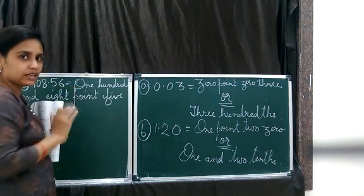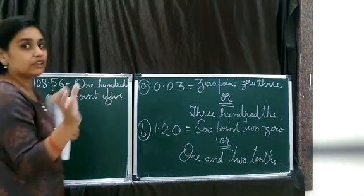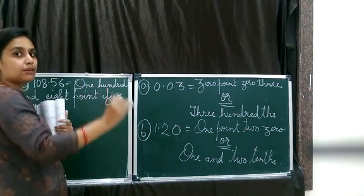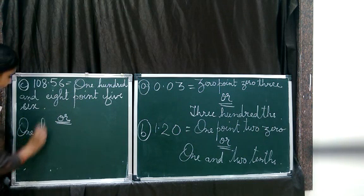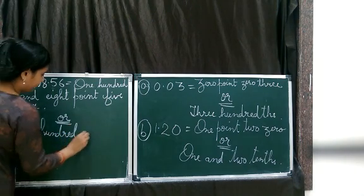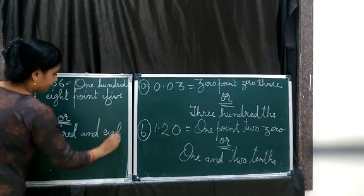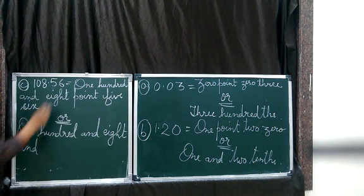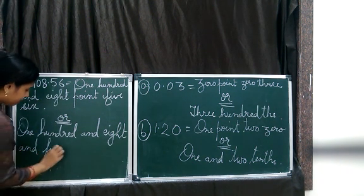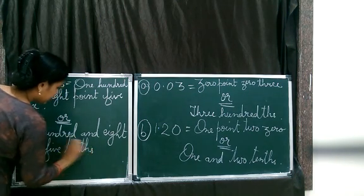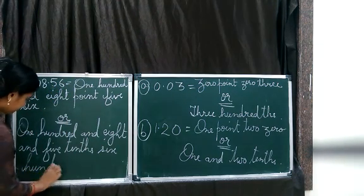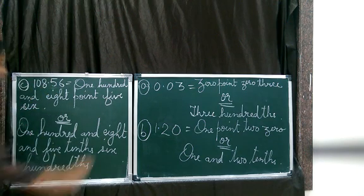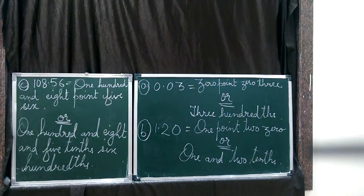That is why after the decimal we read the numbers separately. We don't read the numbers collectively. We don't say them how we say the numbers in the whole numbers. Now how do we write according to the places? 108 and 5 tenths, 6 hundredths. This completes C.